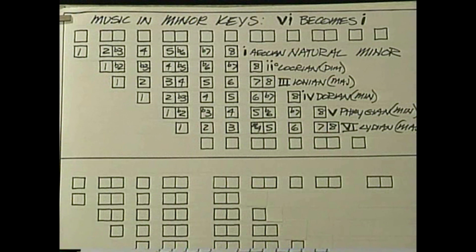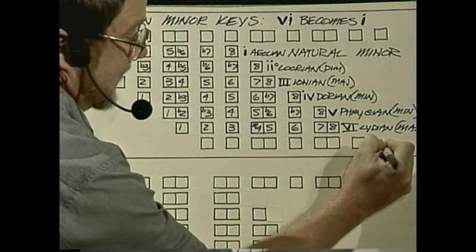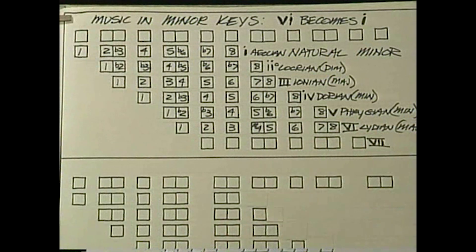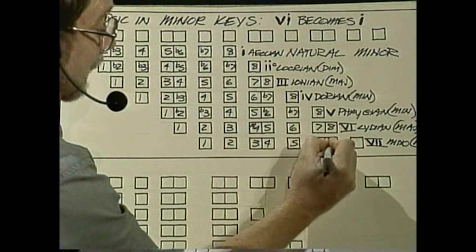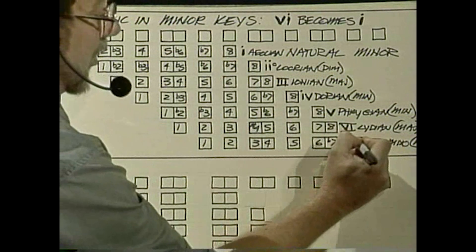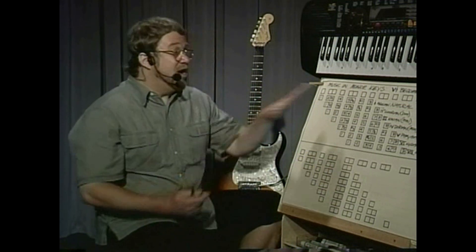Our seventh mode in a minor diatonic key is our old five mode from the major key — the Mixolydian, which is a major scale because it has a major third: one, two, three, four, five, six, flat seven, eight. So when we look at the modes and embedded triads in minor key music, we see they're the same as the major key stuff — it's just we're starting on six. No new scales, no new modes — just a different way of thinking about them. They are simply arrayed differently.